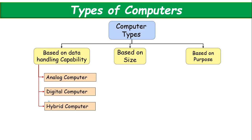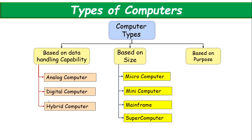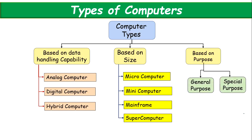But still, I will tell you based on size and speed, whatever the efficiency is, how we can categorize it. One is micro computer, mini computer, mainframe, and super computer. And last is based on purpose — is it a general purpose or a special purpose computer?